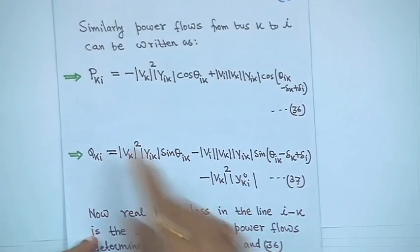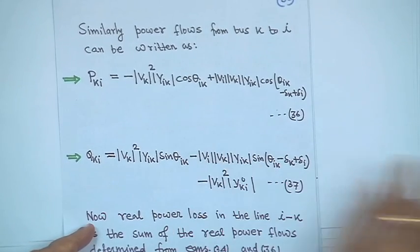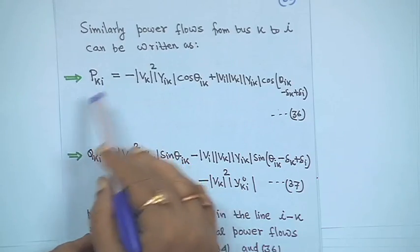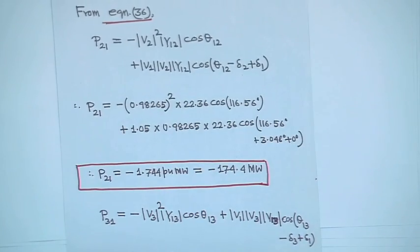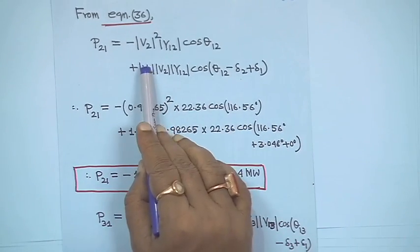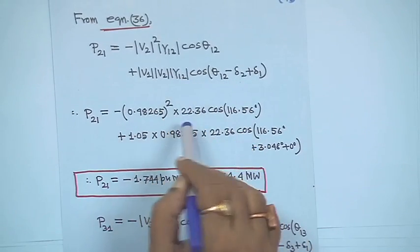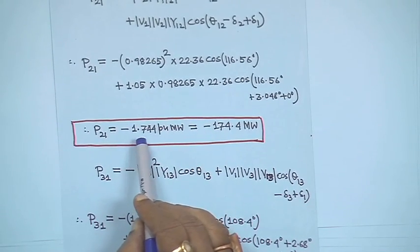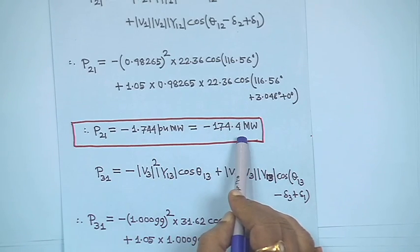Next, from equation 36, P_ki was P_ik. So this is the expression for P_ki. Here, find out P₂₁ also, where k is equal to 2 and i is equal to 1. If you substitute in this expression, that will be the expression for P₂₁ from equation 36. Putting all the parameters, you will get P₂₁ is equal to minus 1.744 per unit, that is minus 174.4 megawatt.